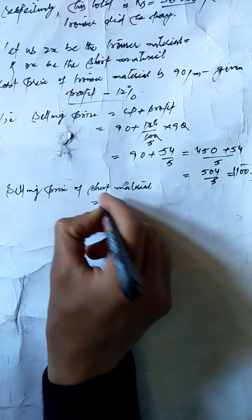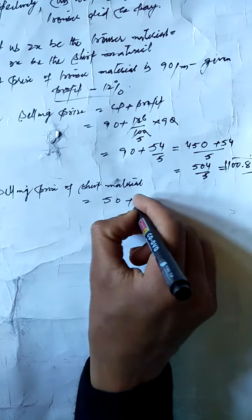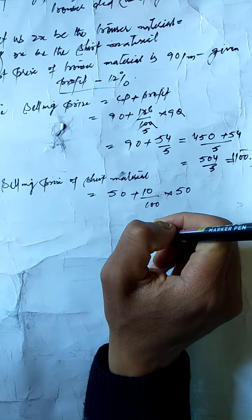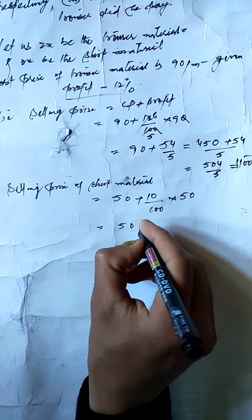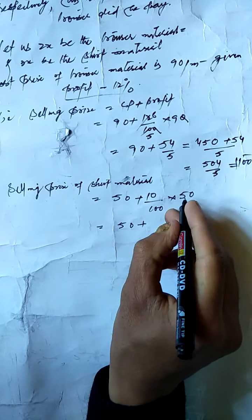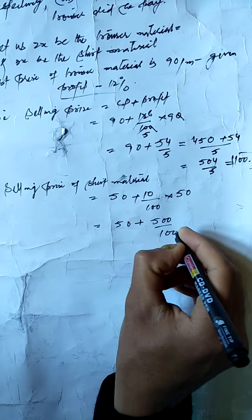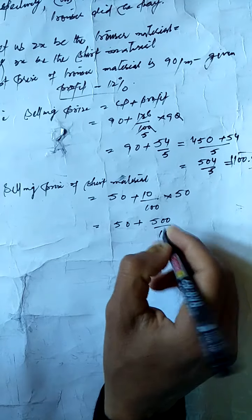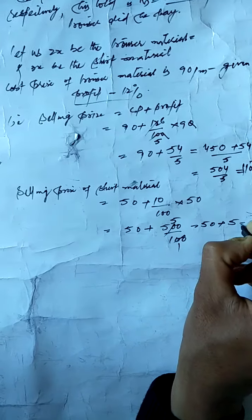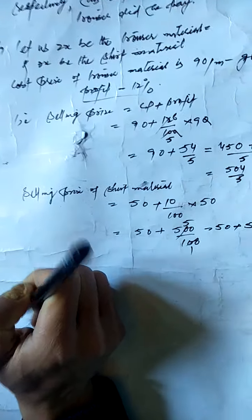Selling price of shirt material: cost price is rupees 50 per meter with 10% profit. So selling price equals 50 plus 10 divided by 100 into 50, which gives 50 plus 5, equal to rupees 55 per meter.